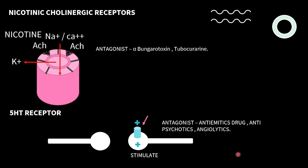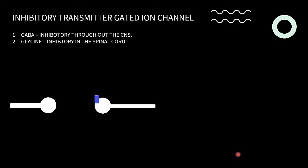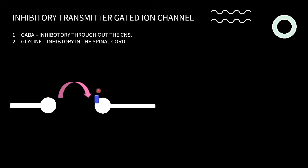Now let's discuss inhibitory transmitter-gated ion channels. There are two types: GABA and glycine — both are inhibitory neurotransmitters. GABA is inhibitory throughout the CNS, whereas glycine is inhibitory only in the spinal cord. Whenever GABA is released, it binds to the GABA-A receptor — a chloride channel receptor — not GABA-B, which is a GPCR receptor.